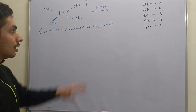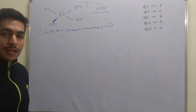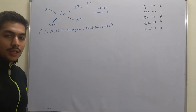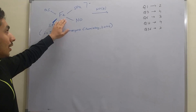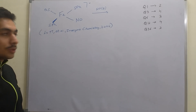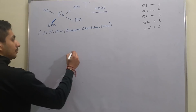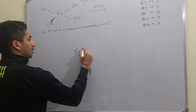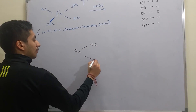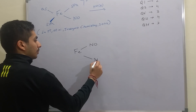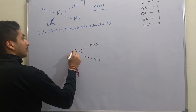The paper clearly mentions that in the presence of one equivalent of NO, a complex where we have three SPH groups and one NO group gives a specific product. Basically, one equivalent of NO is replacing one SPH group and everything else remains the same.